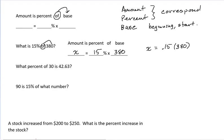Multiply those together, x is 57. So 57 is 15% of 380.